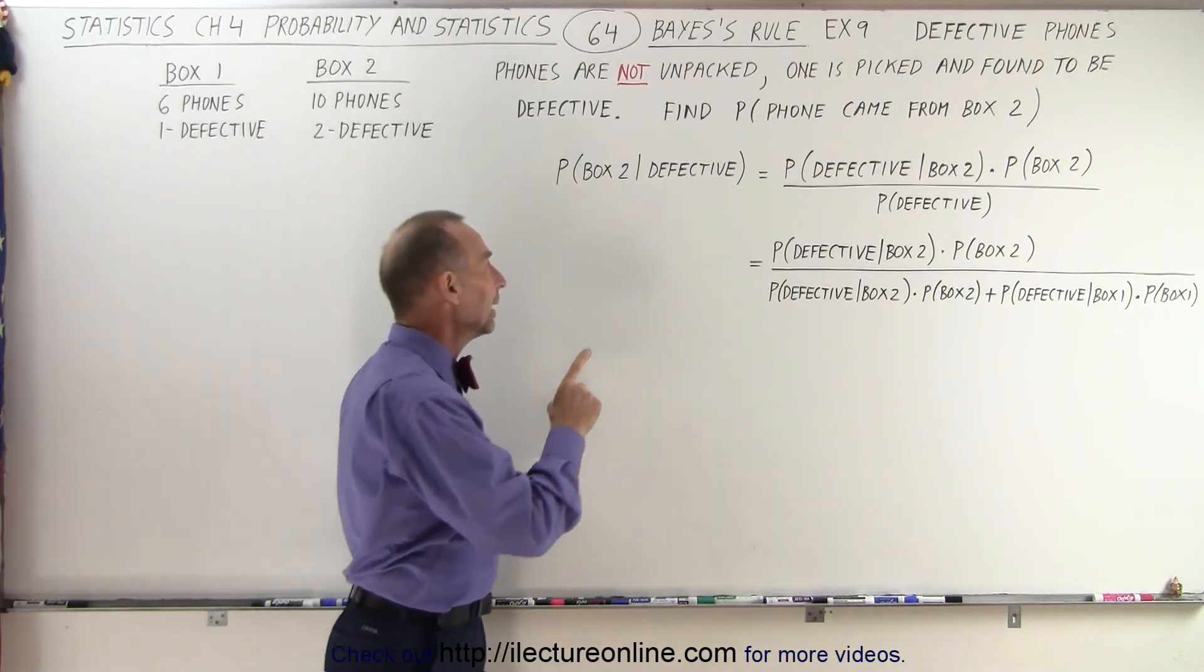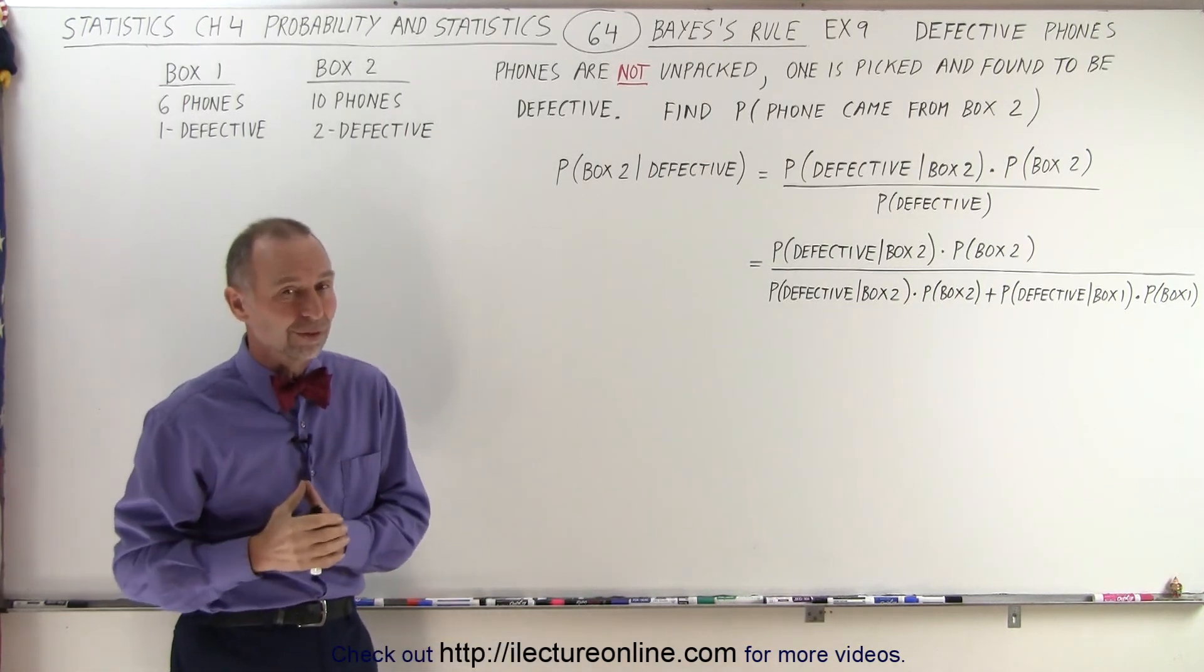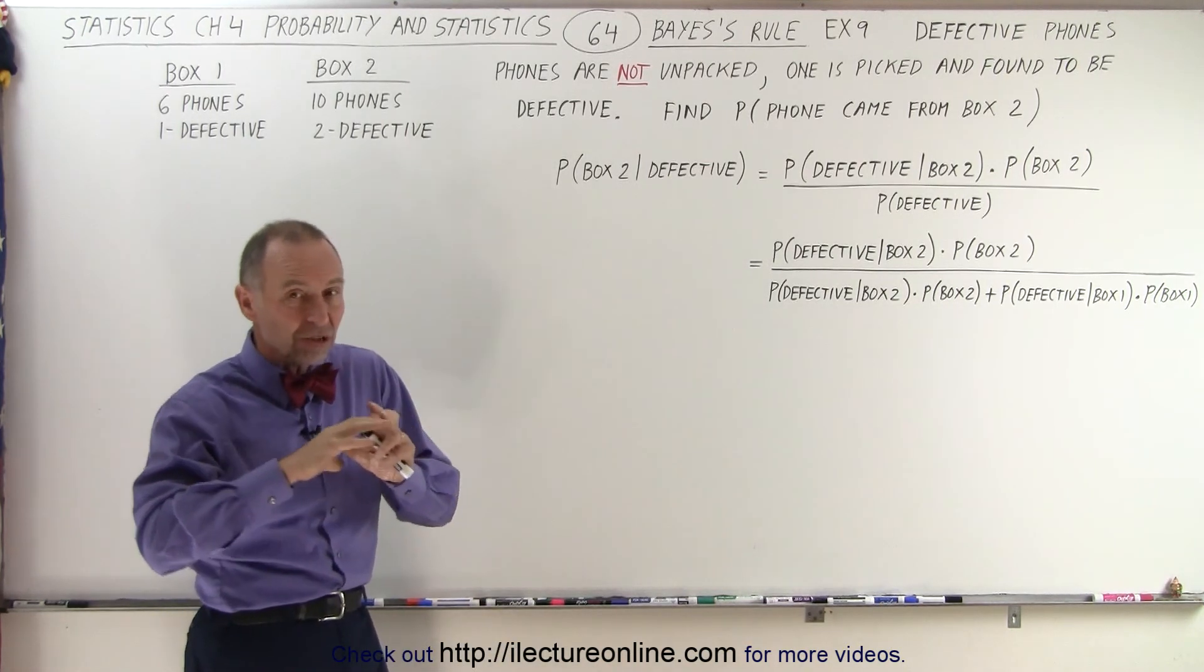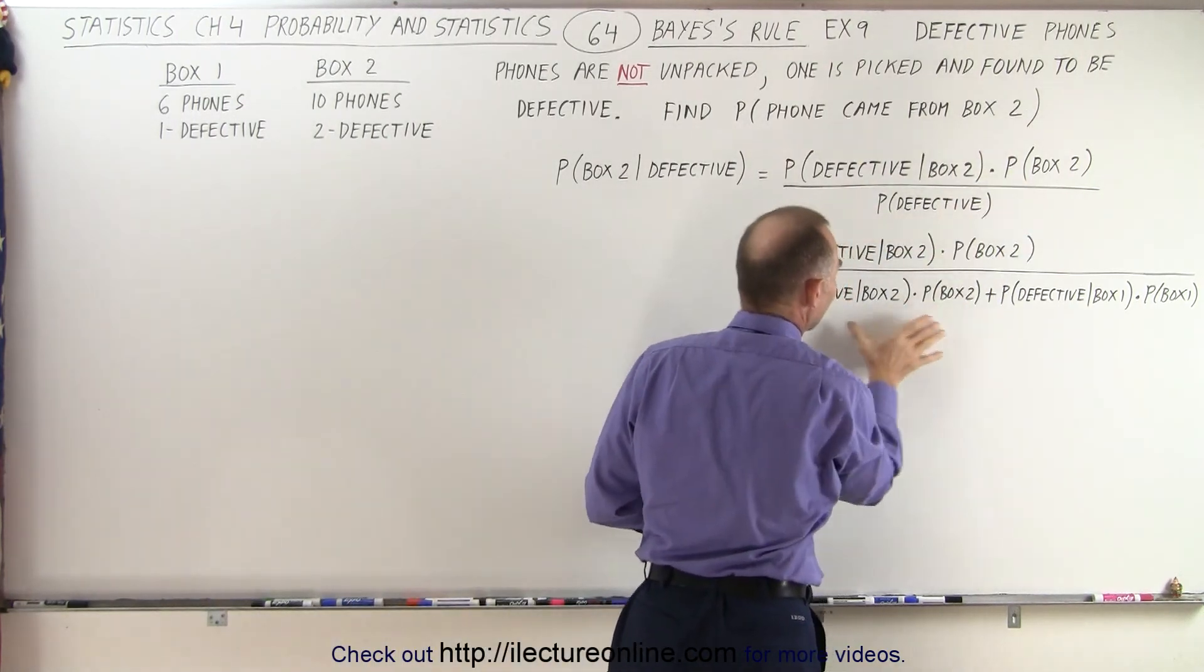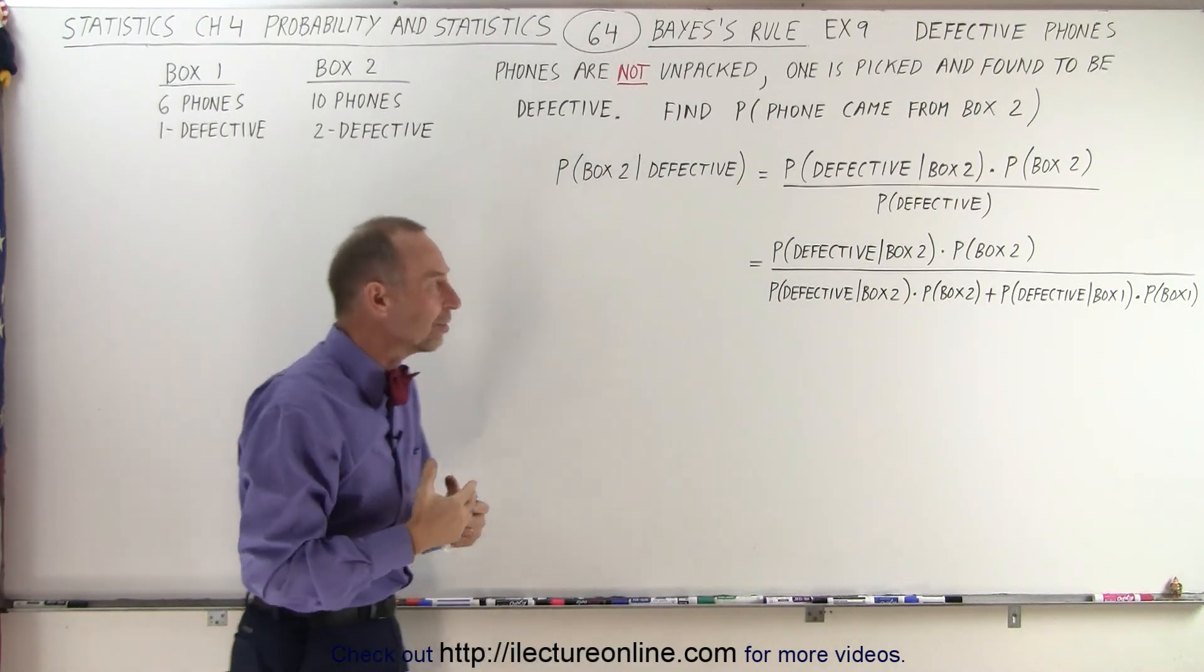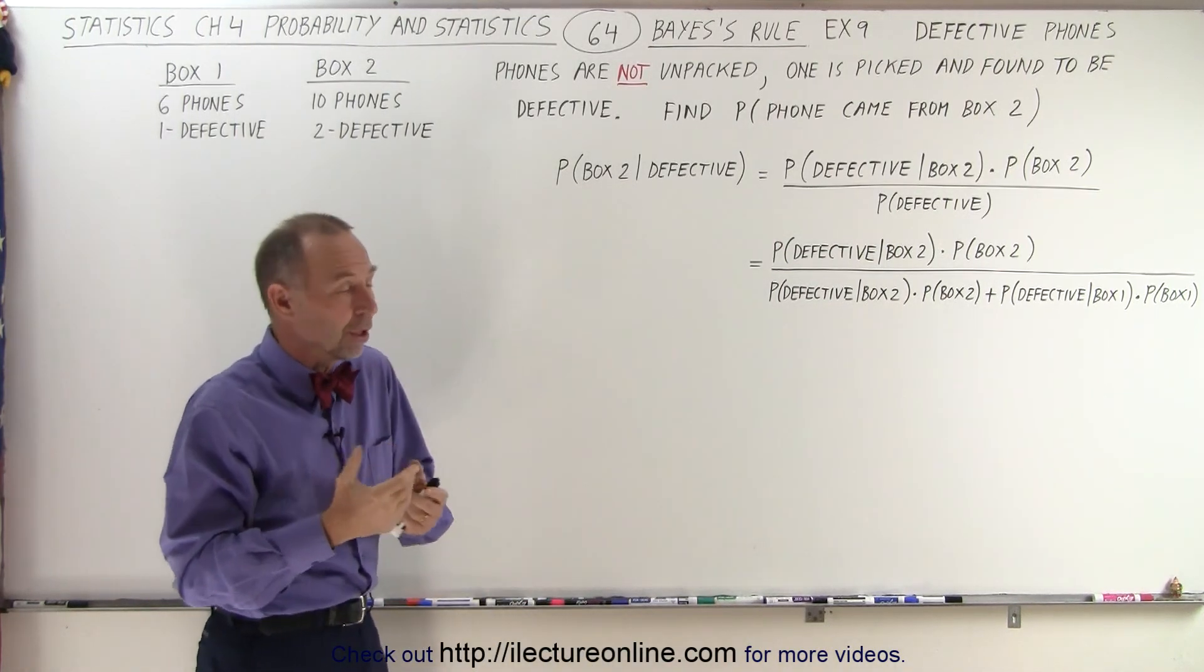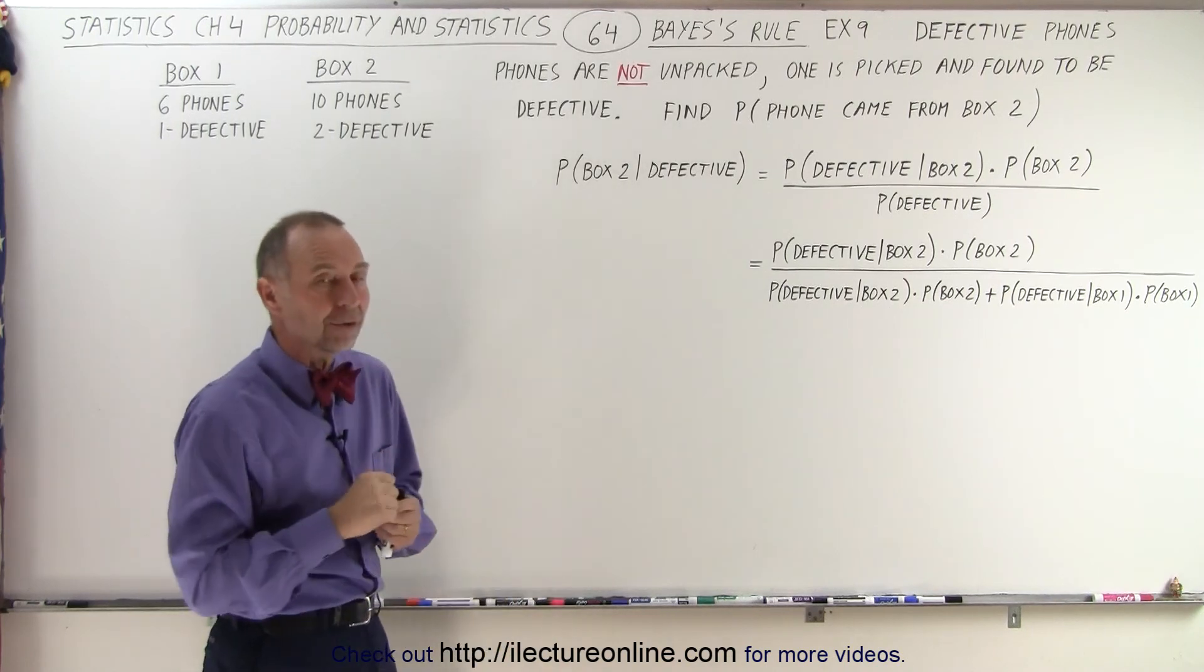Now, what is the probability that we picked that out of box two, given the phone was defective? So the equation in general is the same. The general concept here is the same, except in the denominator now, we need to sum up all the possibilities of having a defective phone when we pick it out of a box, first out of box two and then out of box one.